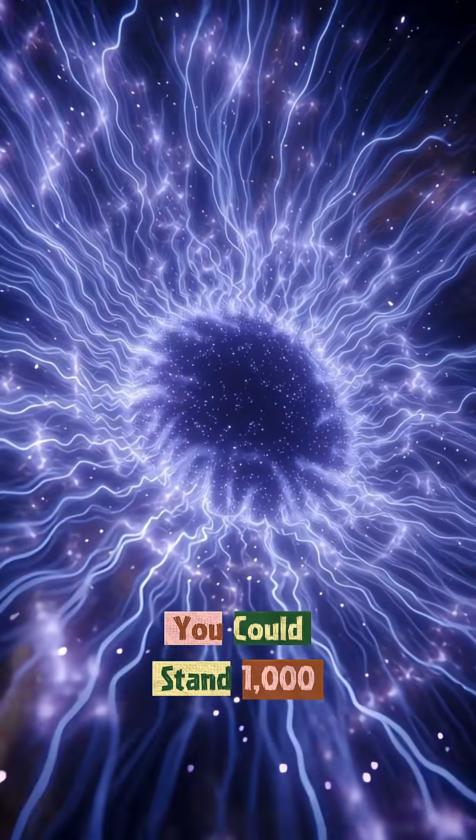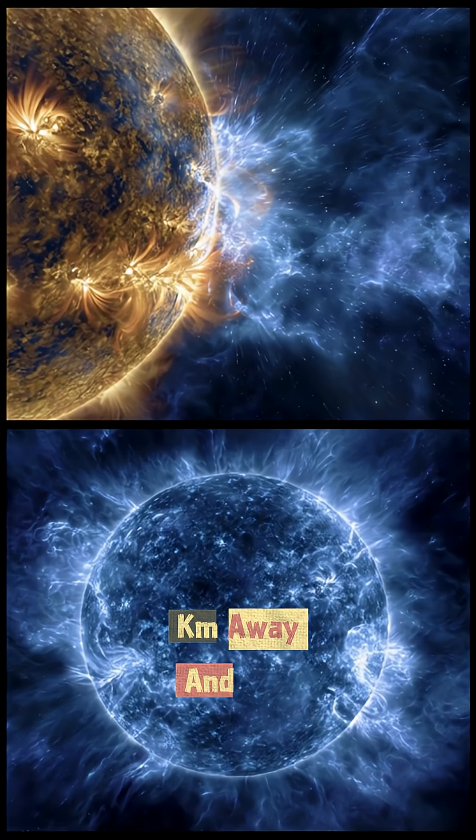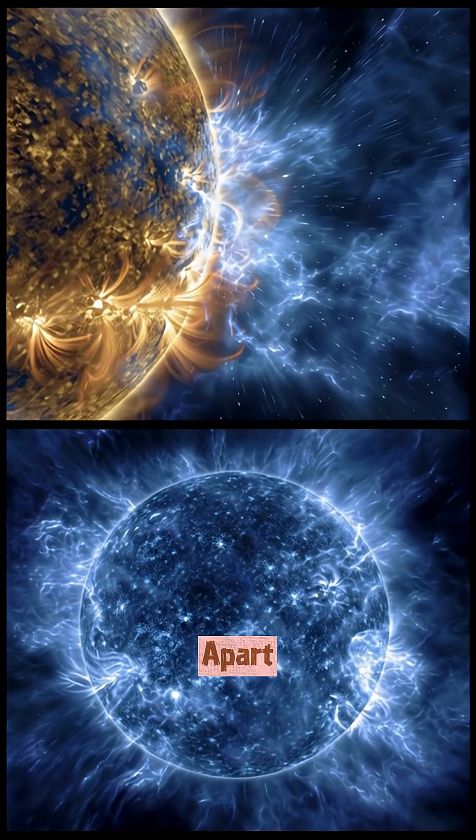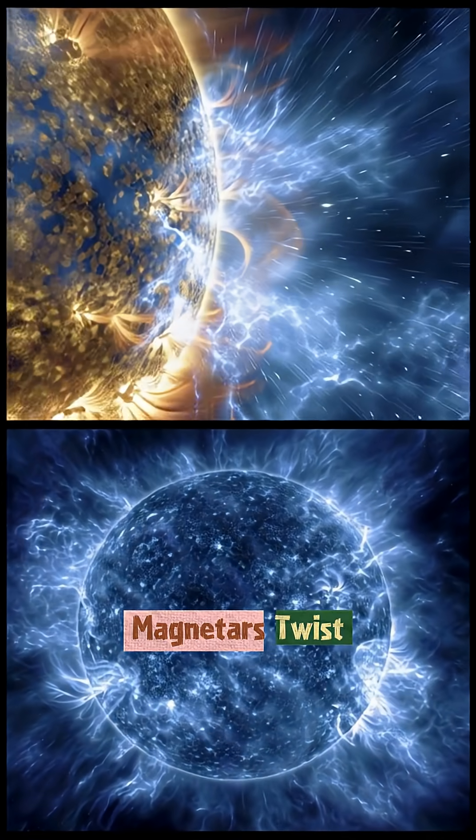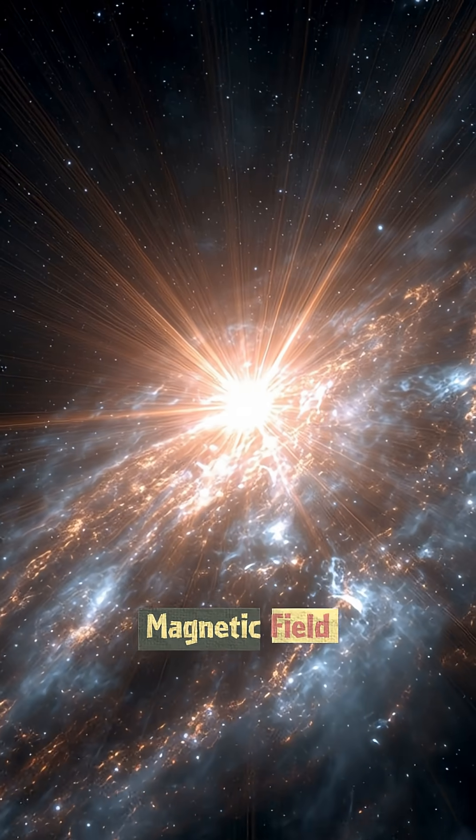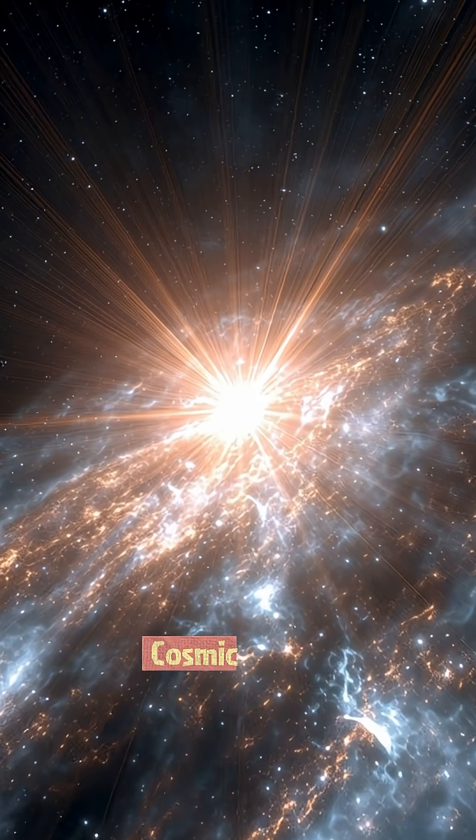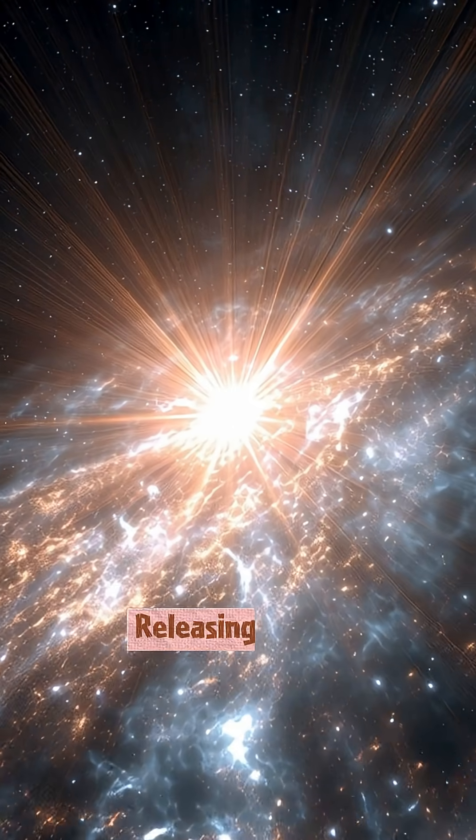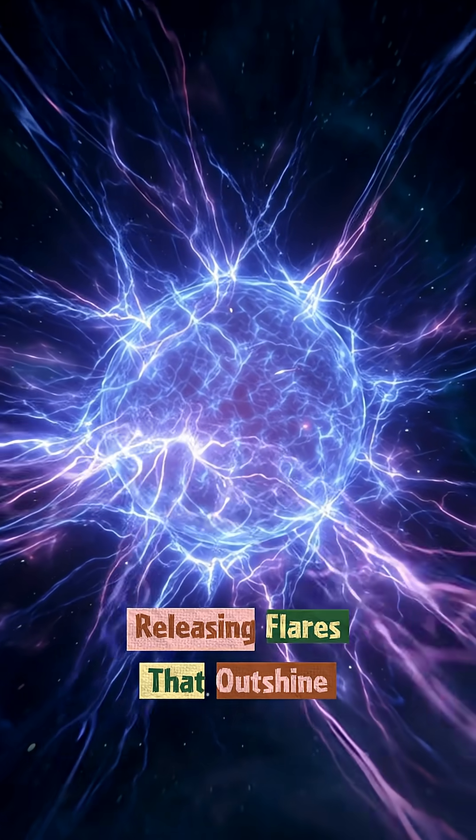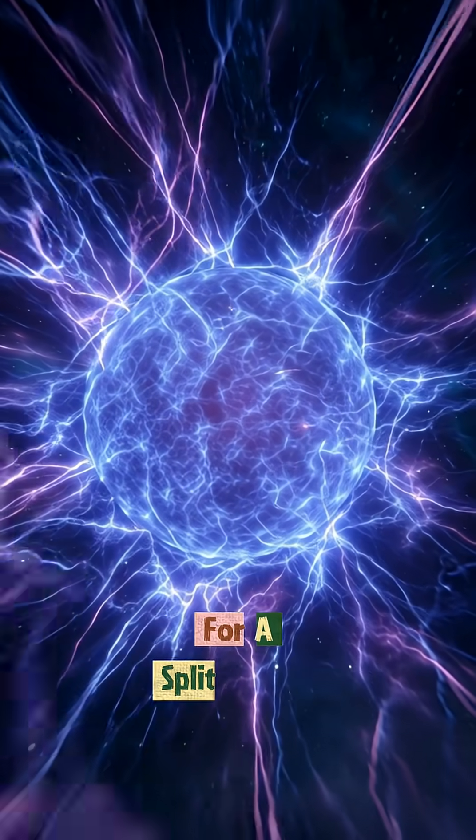You could stand a thousand kilometers away and still have your atoms ripped apart. Magnetars twist and snap magnetic field lines like cosmic whips, releasing flares that outshine entire galaxies for a split second.